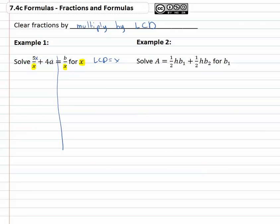And so we'll multiply each term on both sides by x, because when the x's divide out, we're left with 5 plus 4ax equals b.